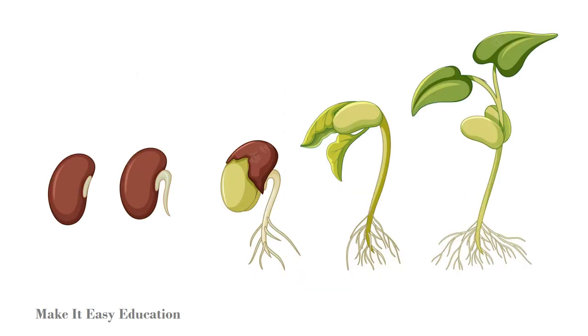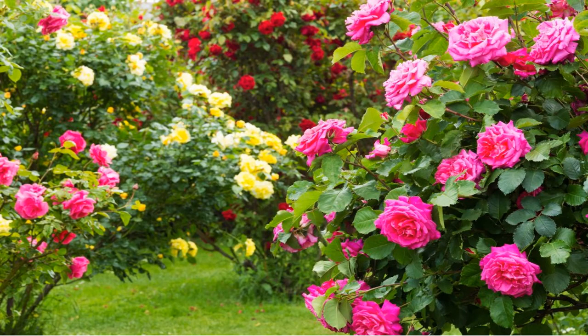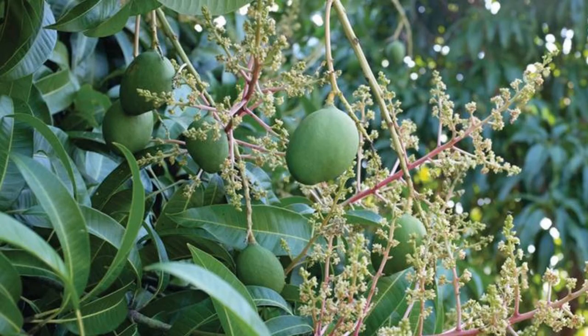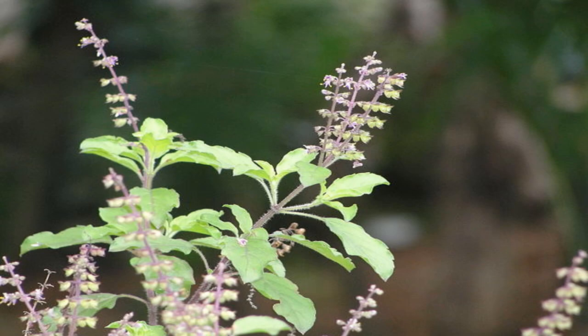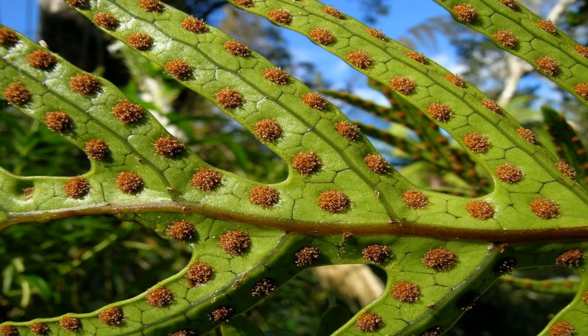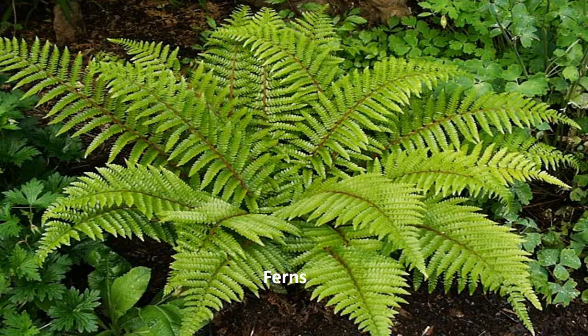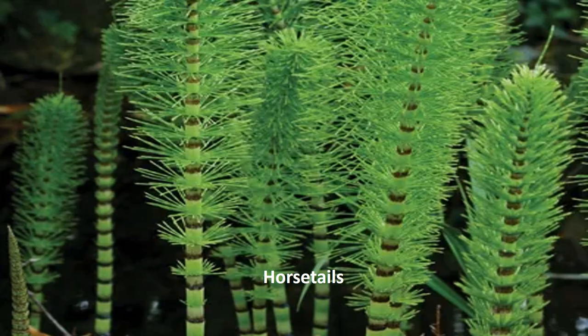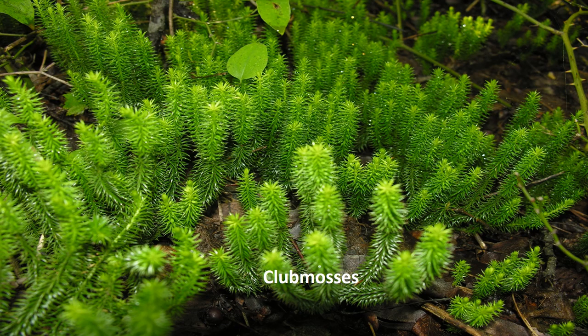Vascular plants reproduce through seeds. All flowering plants are vascular plants, like rose, mango, tulsi, mint, etc. Some vascular plants reproduce through spores, like ferns, horsetails, and club mosses.